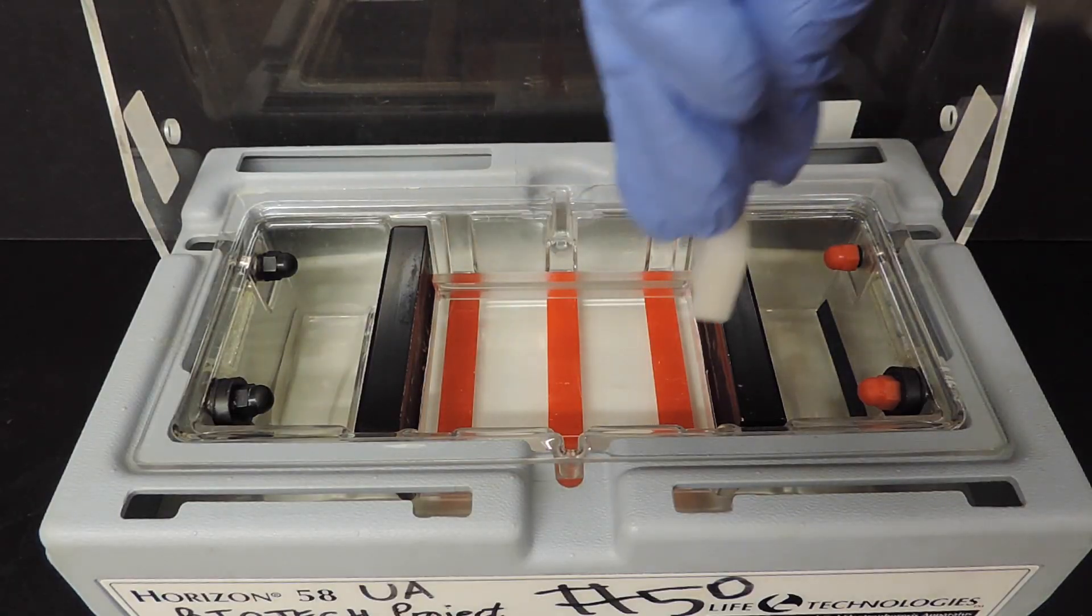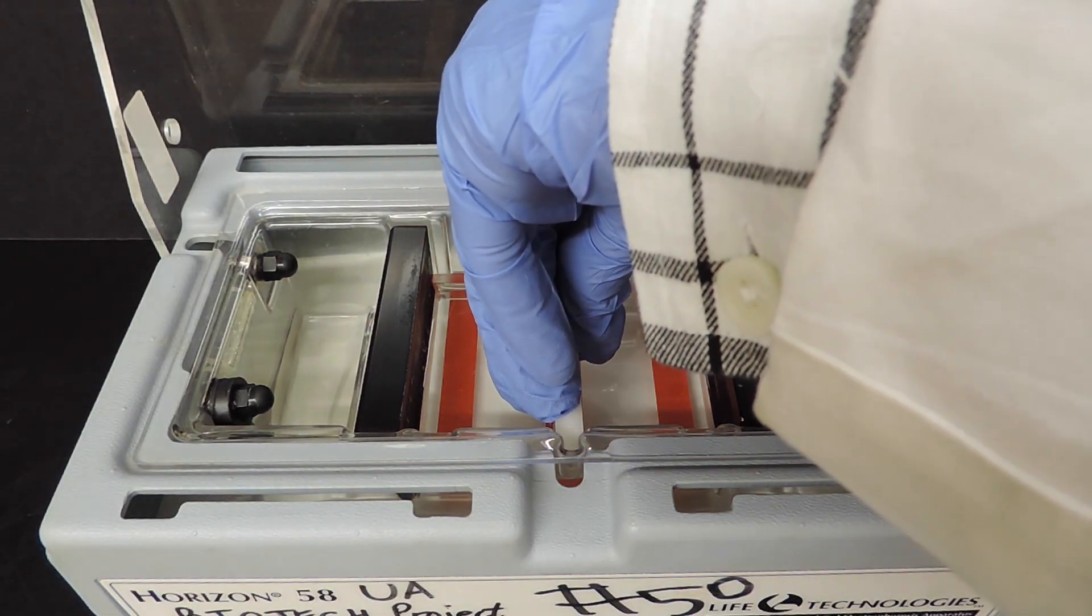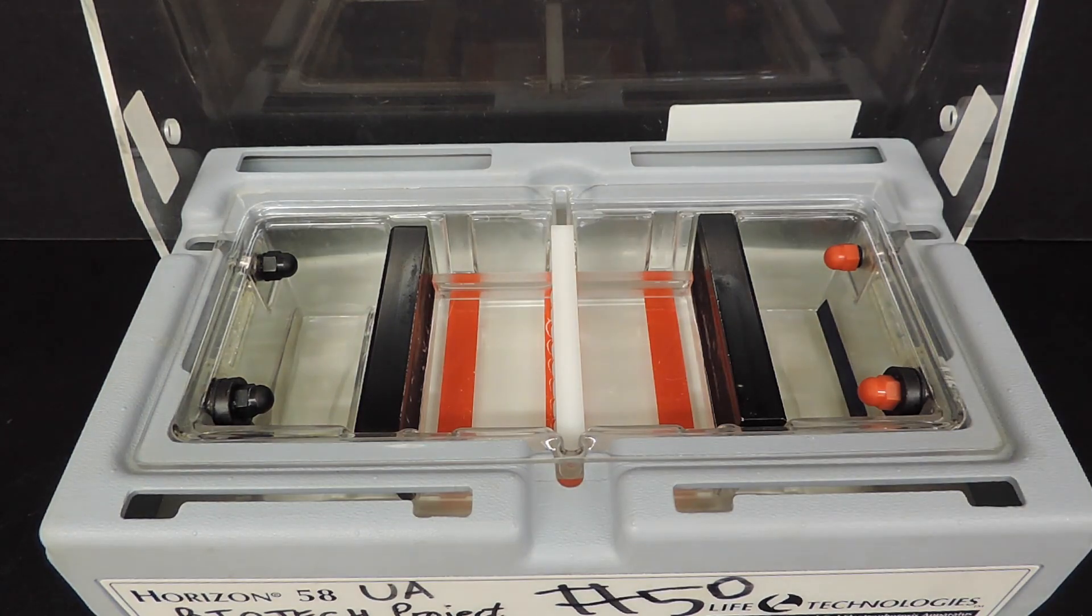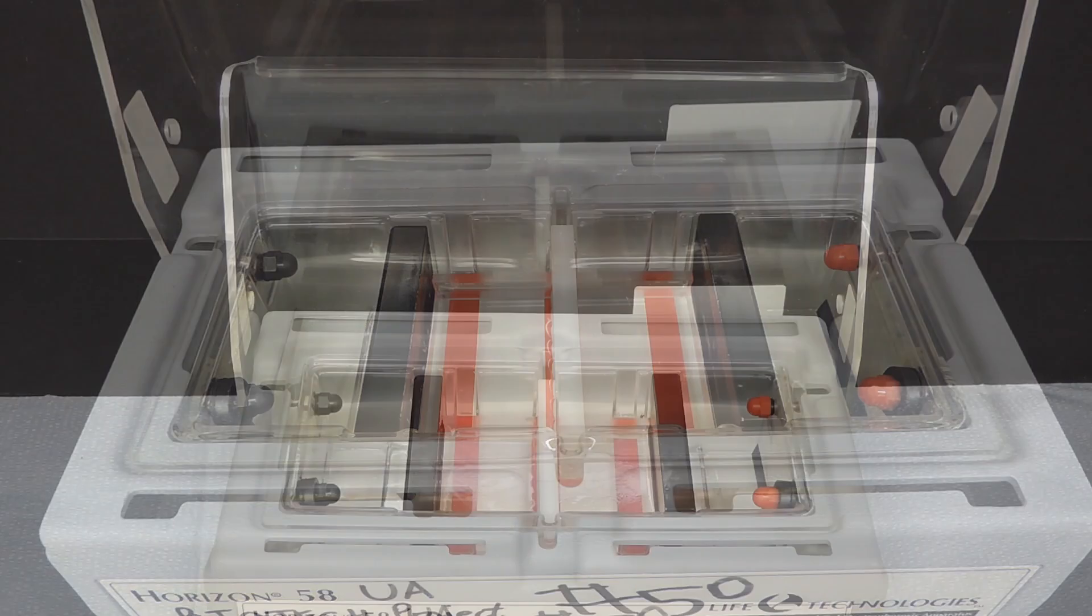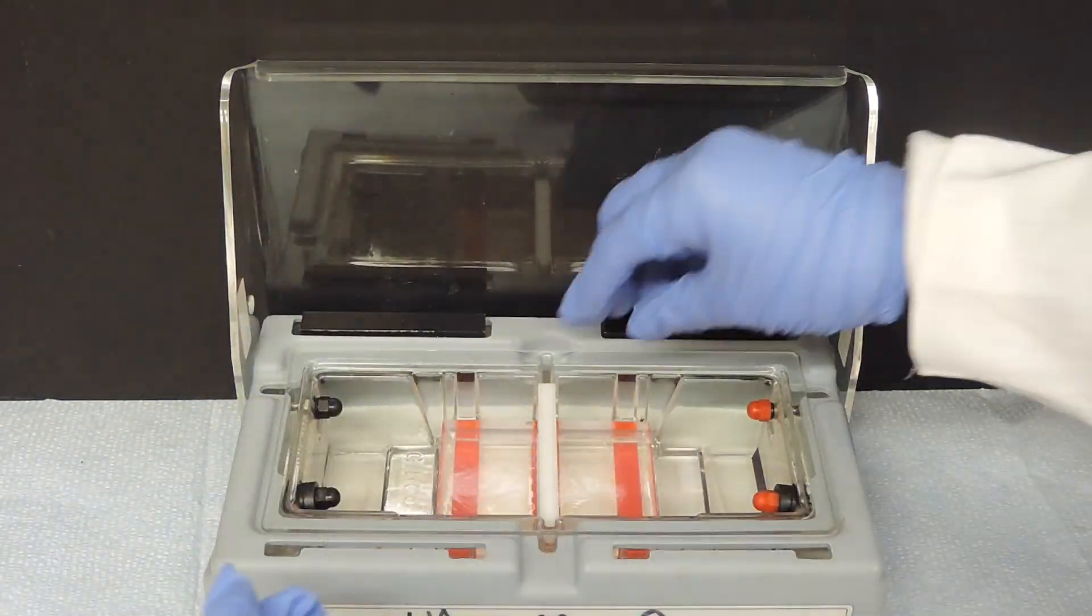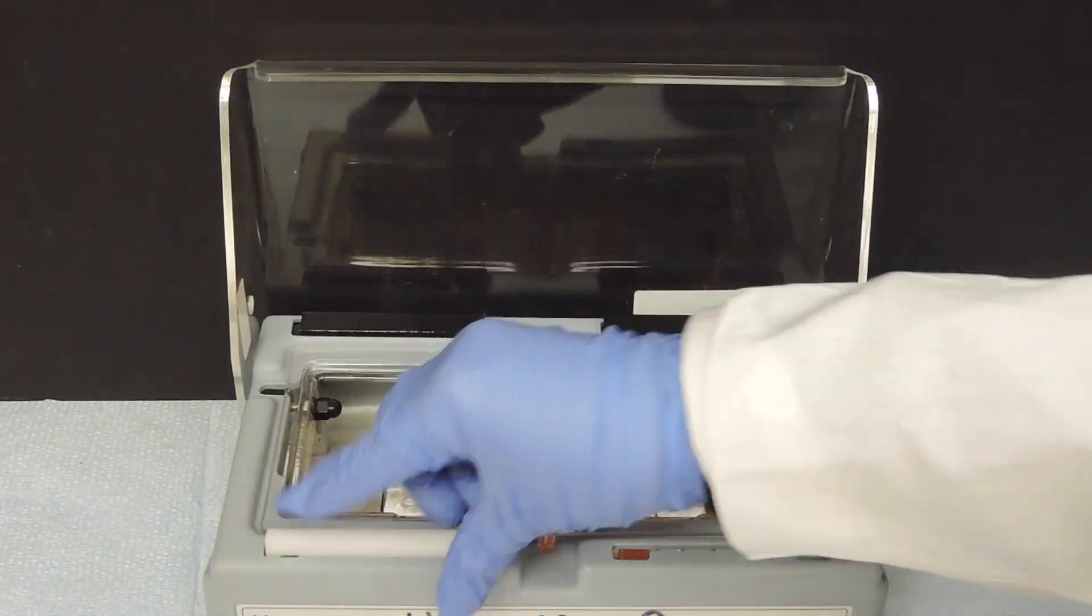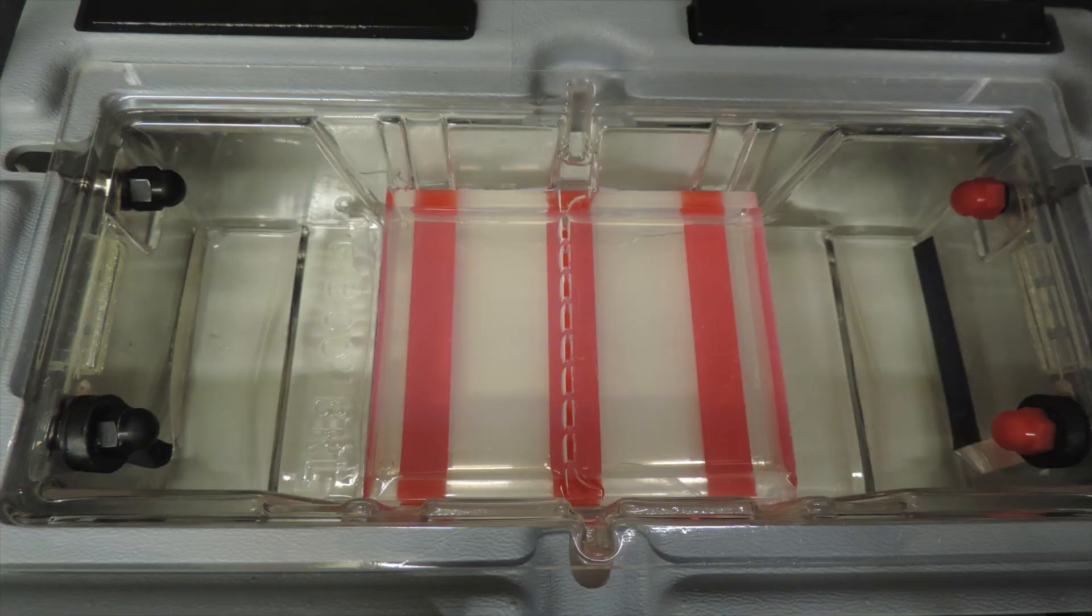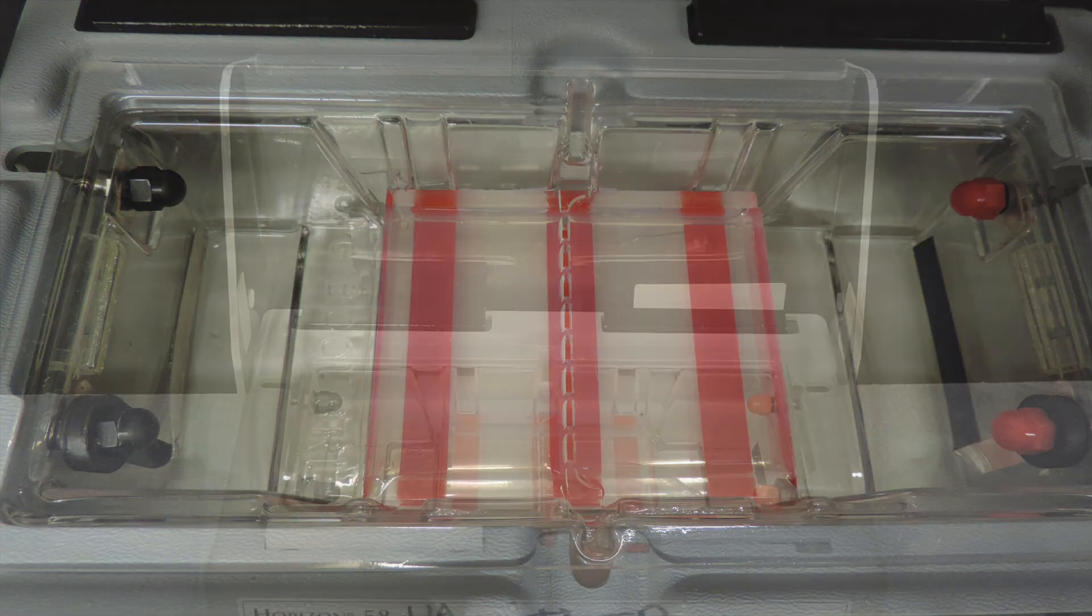The comb is placed in the middle because the dyes contain both positive and negatively charged molecules. We do not know which way these dyes will move. The gel should solidify in 5 to 10 minutes. Carefully remove the stoppers and comb. You should have a completely solidified gel with wells made by our comb in the middle.